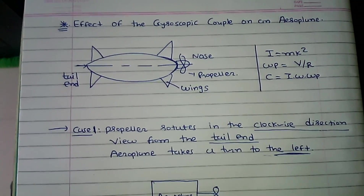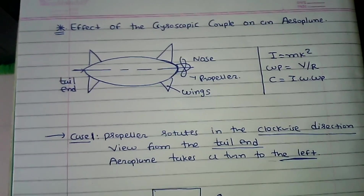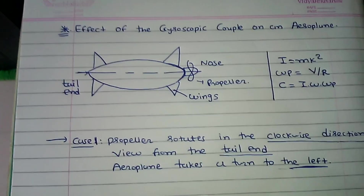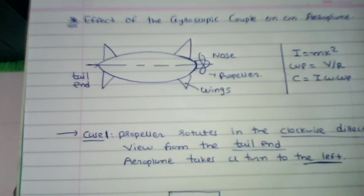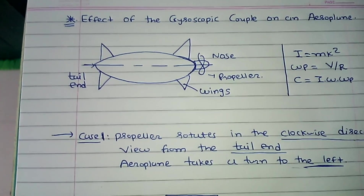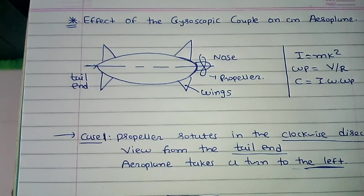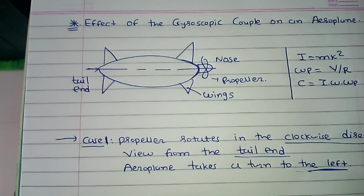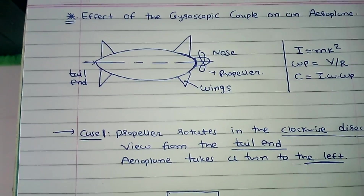Hello friends, today we discuss about the effect of the gyroscopic couple on an aeroplane. In GTV exams, there is one example from gyroscopic couple related to ship or an aeroplane. Today we discuss about aeroplane examples.